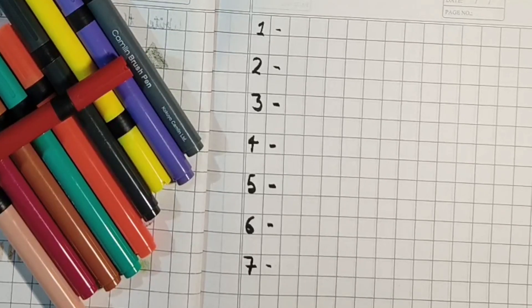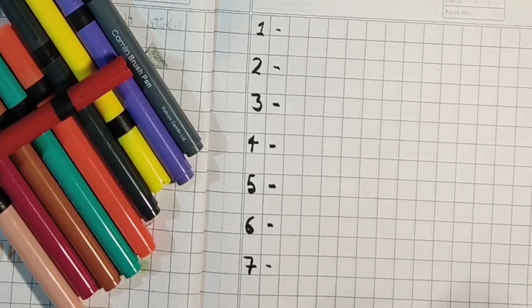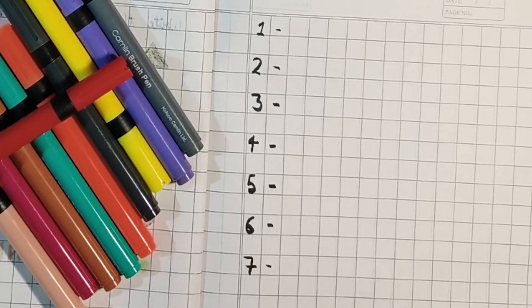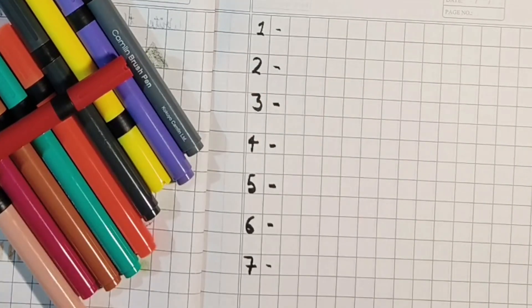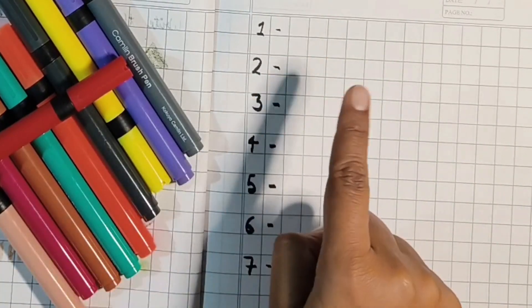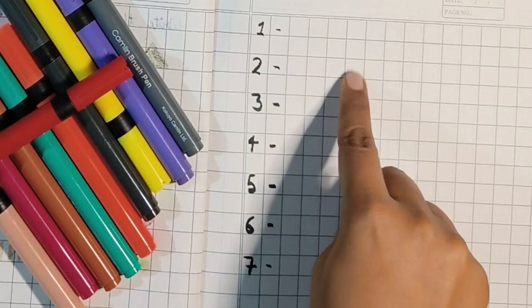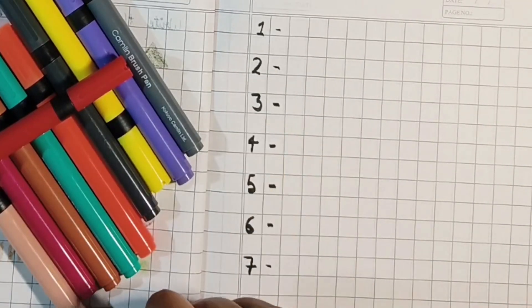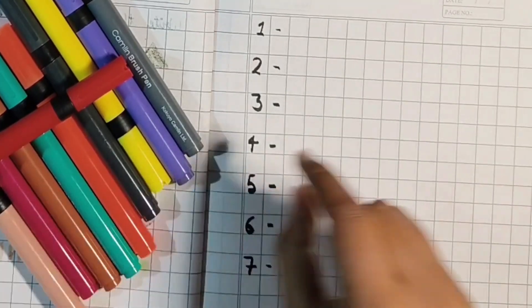Hello students, today we have to make shapes based on the numbers written. You have to make that number of shapes. Like here it is one, so you have to make one shape. Here it is written two, so you have to make two different shapes. And here is three, so you have to make three identical shapes.